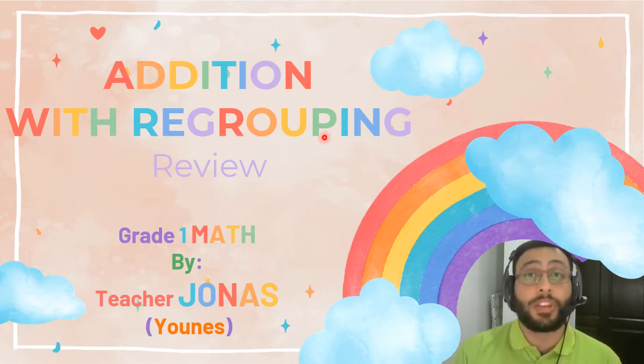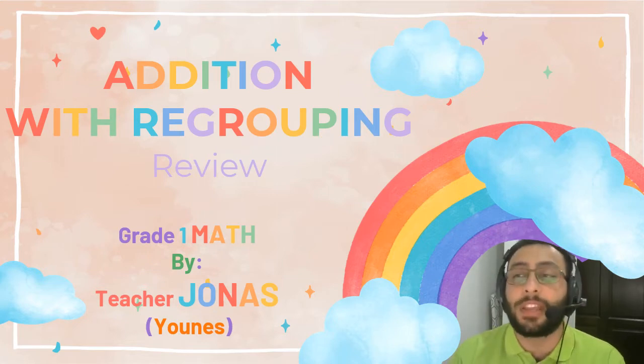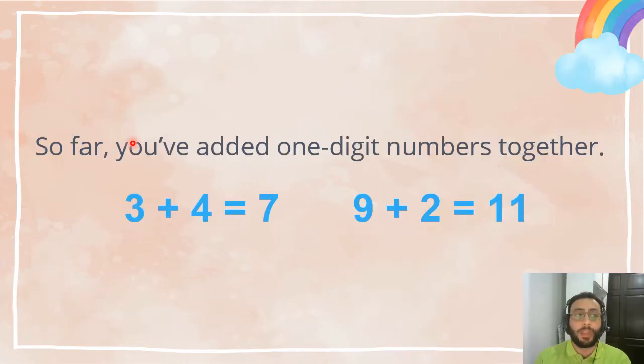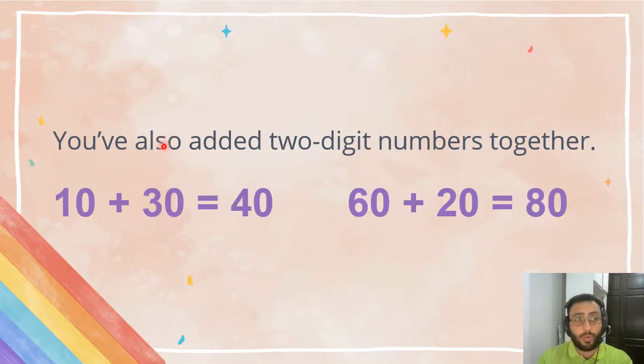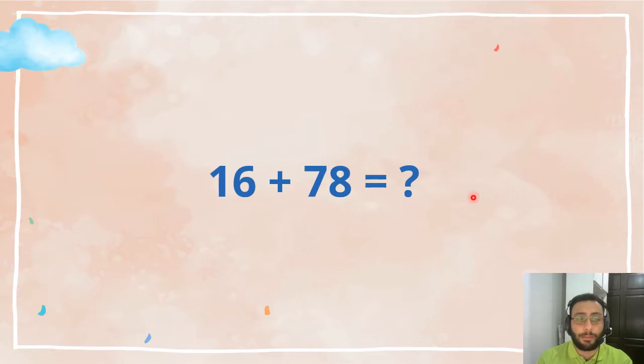Alright, let's begin. So far you have added one digit numbers together, like 3 plus 4 equals 7, or 9 plus 2 equals 11. You have also done double digit or two digit numbers together: 10 plus 30 equals 40, 60 plus 20 equals 80. See, this is easy for you now. But remember, we also learned about addition with regrouping.